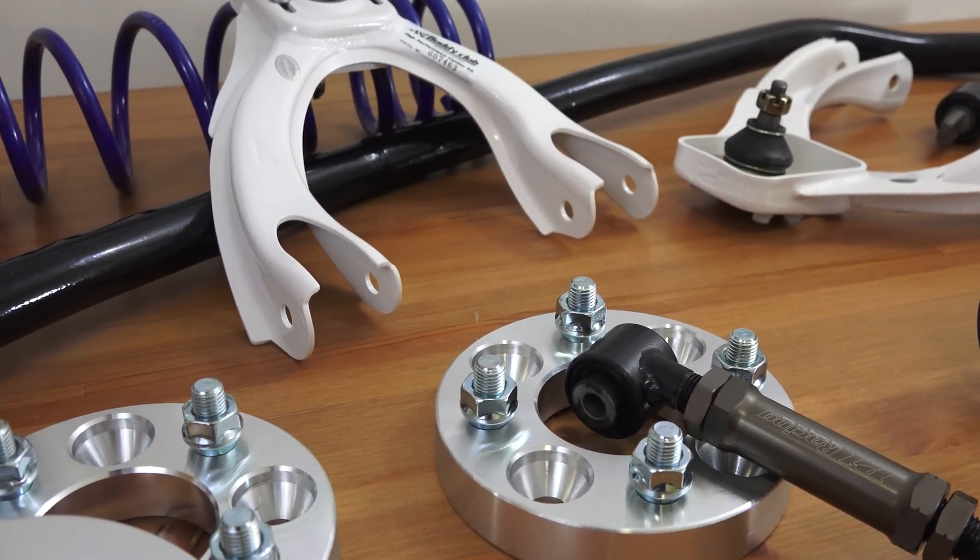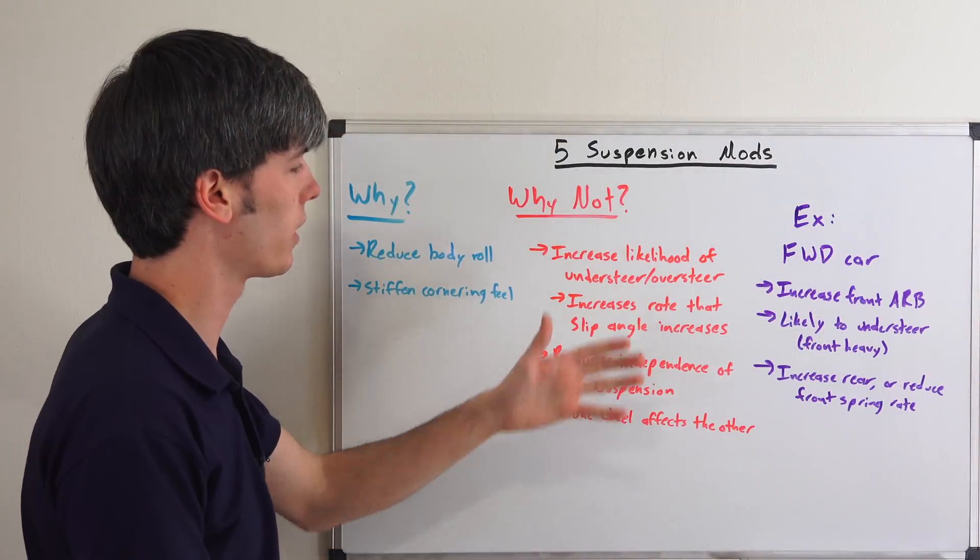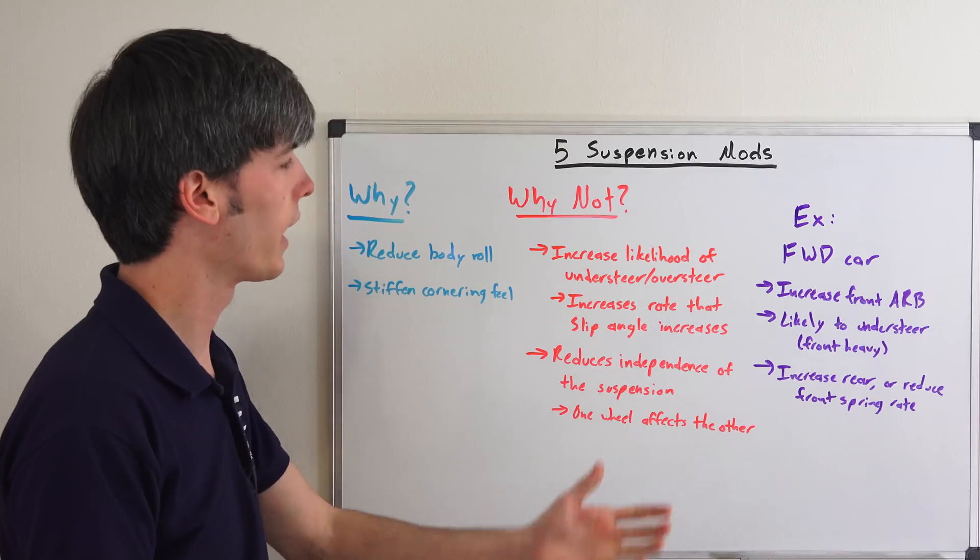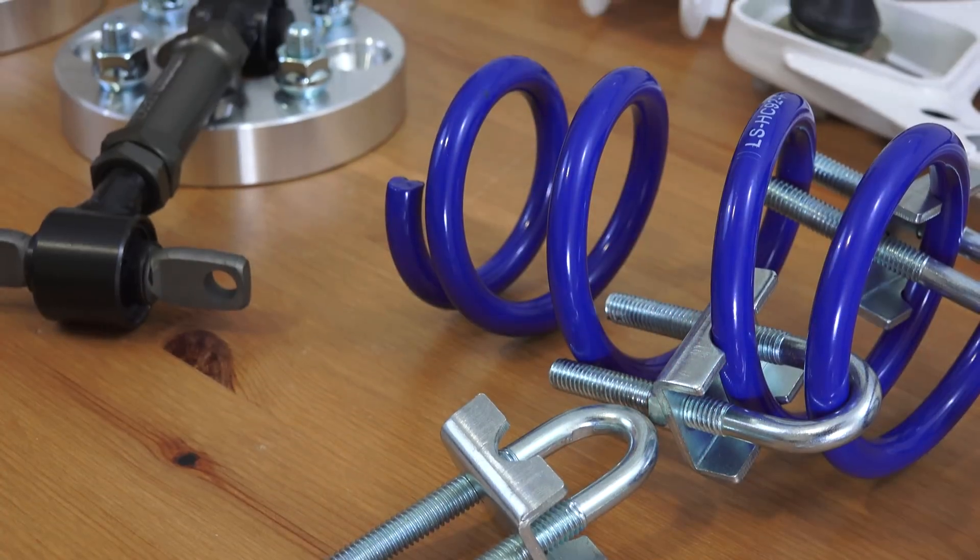So you're going to be reducing the grip of both wheels rather than just one. You want an independent suspension. You don't necessarily want the beefiest anti-roll bar out there that you can fit onto it, because you eliminate your independence of your suspension and you increase the likelihood of that axle to slide out.